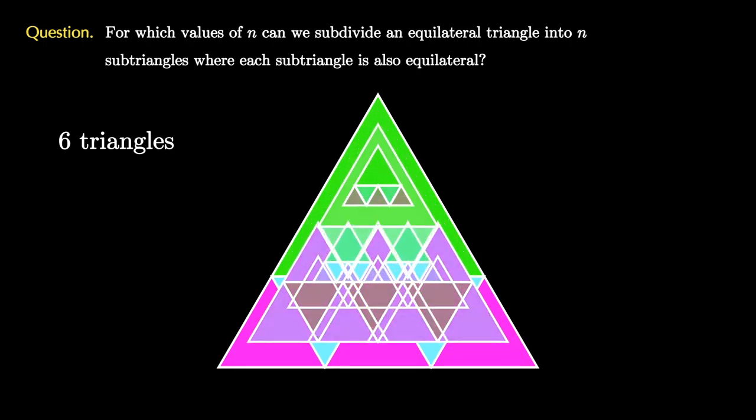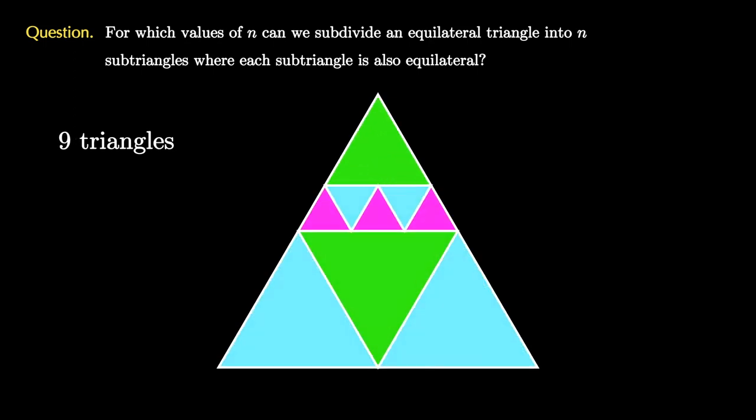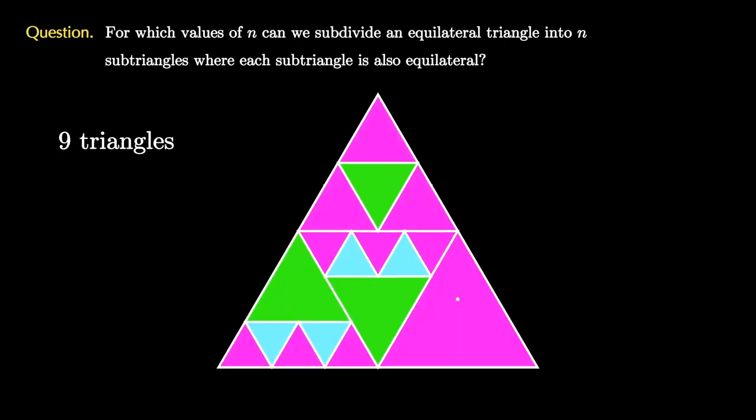They don't all have to be the same size. Here's one where we've decomposed the triangle into nine sub-triangles, and here's an example where we have 17 sub-triangles, and here's a final example where we have 29 triangles.